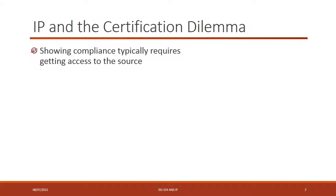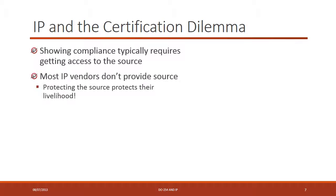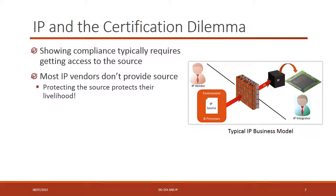The best way to demonstrate compliance would be to have DO-254 compliant IP. Why don't we have that? Showing compliance, especially for DAL A and B designs, typically requires getting access to the source of that IP. The issue is that most IP vendors don't provide their source — providing their source would basically annihilate their business. Protecting their source protects their livelihood.